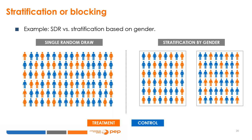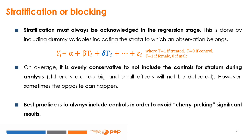As an example, in a simple random draw each unit is allocated to treatment or control individually through a coin toss or random number generator. For stratification by gender, the sample is first divided into men and women, and then within each gender group, units are randomly allocated to treatment or control. Stratification must be acknowledged in the regression stage by including dummy variables indicating the stratum to which each observation belongs. For a gender example, the equation includes S, a dummy equal to 1 if the subject is female and 0 if male.